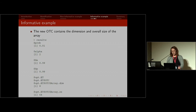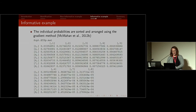When you print the results, you can see the array dimension and array size. It also prints out the matrix of probabilities arranged in the gradient method, so you can view each probability for each individual tested in the algorithm.